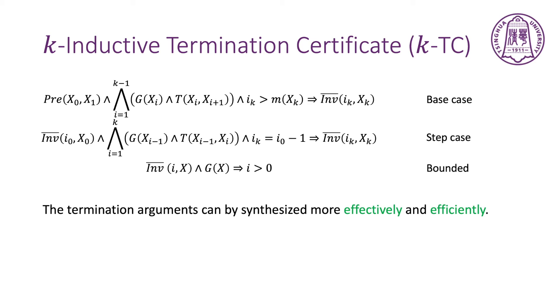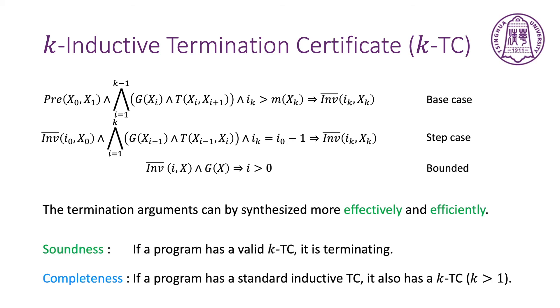We present the K-inductive Termination Certificate formally. The base case unrolls the loop K-1 times following the precondition. The step case unrolls the loop K times in the loop body. The standard approach can be viewed as a special case of our K-inductive Termination Certificate. Our approach is sound and relatively complete. That means it is more powerful than the standard approach.